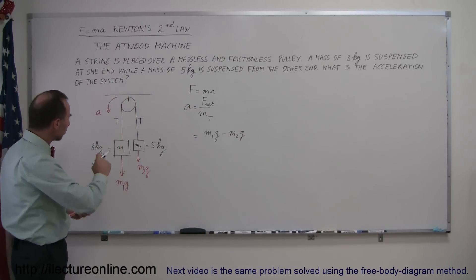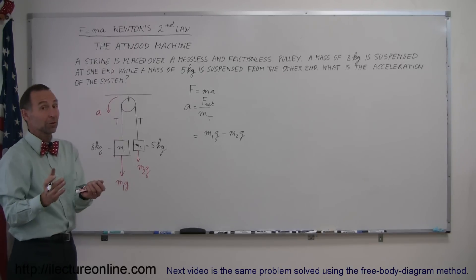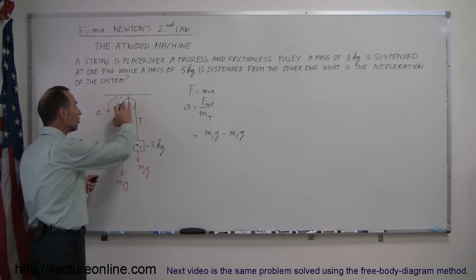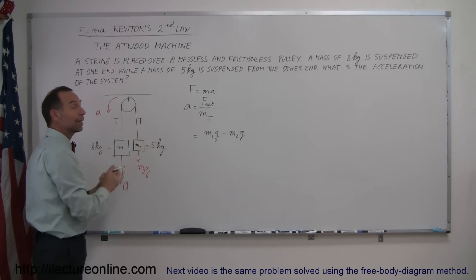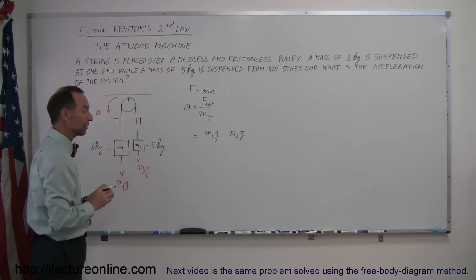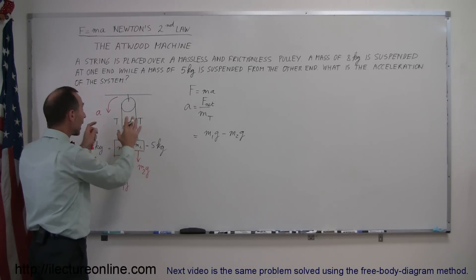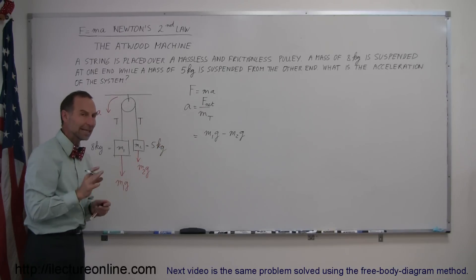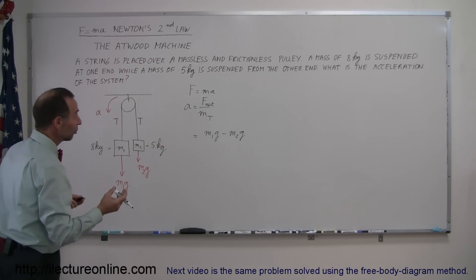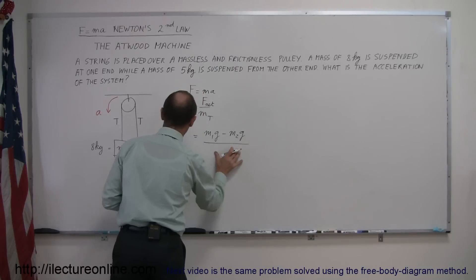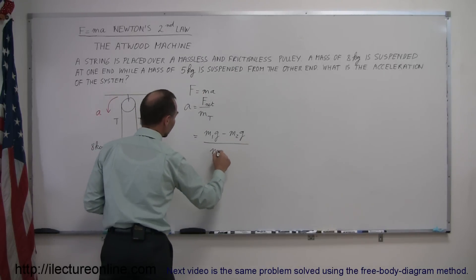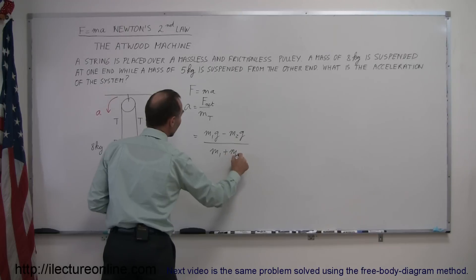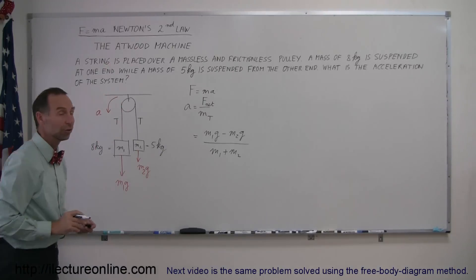What about the tension on the string? Doesn't the tension pull on the masses as well? And you're absolutely right, those tensions do. But since the tension is within the system, as part of the system, the way we solve the problem here, we do not need to worry about that. Only the outside forces, the external forces. The next time I do this problem, I will actually do it where we have to take into account all the forces acting on it, but this is definitely the easiest way to do this problem. So we then take that net force and divide it by the total mass. And the total mass would be the sum of the two masses, m1 plus m2.